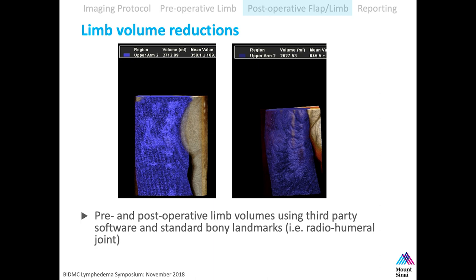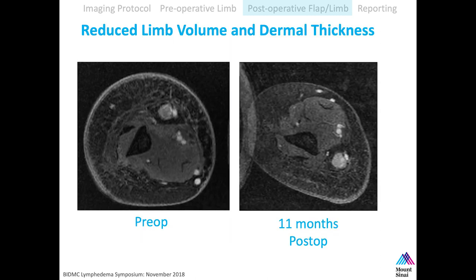We can measure limb volume reductions from pre-op to post-op — something we're actively working on. Because we acquire isotropic voxels we can reconstruct in multiple planes. Here's a patient with skin thickening and lymphedema, and nearly a year after surgery, the skin thickening drastically reduced in addition to the lymphedema.